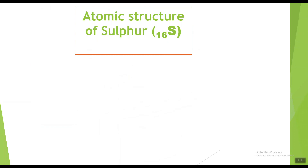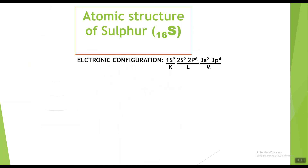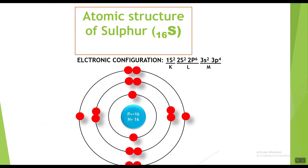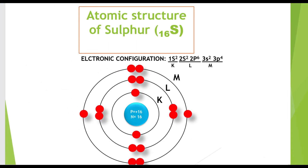Now sulfur. The symbol for sulfur is S with atomic number 16, showing it has sixteen electrons. The electronic configuration of sulfur is 1s2 2s2 2p6 3s2 3p4, showing two electrons in the K shell, eight electrons in the L shell, and six electrons in the M shell. The atomic structure of sulfur shows sixteen protons and sixteen neutrons in the nucleus, with sixteen electrons around the nucleus: two in the K shell, eight in the L shell, and six in the M shell.